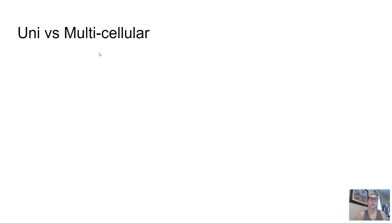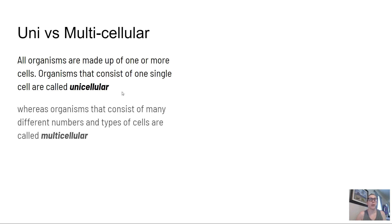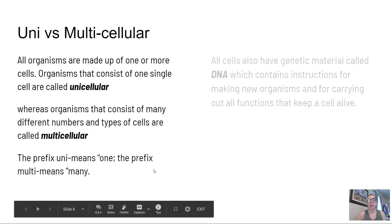So unicellular versus multicellular — all organisms are made up of one or more cells. Organisms that consist of one single cell are called unicellular; 'uni' means one. Whereas organisms that consist of many different numbers and types of cells are called multicellular. The prefix 'uni' means one, and the prefix 'multi' means many.